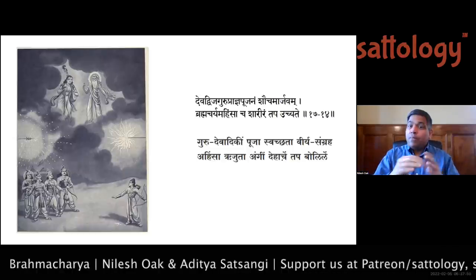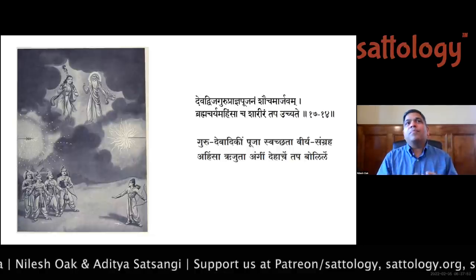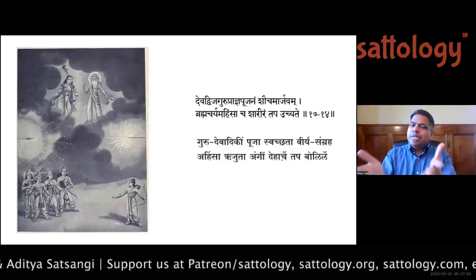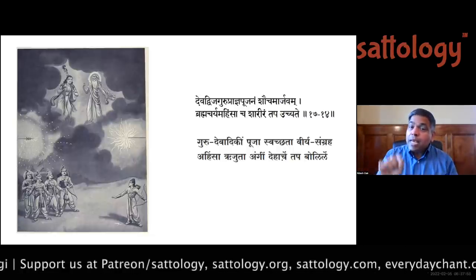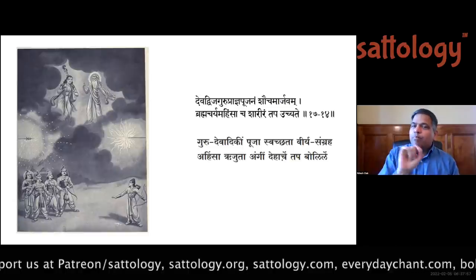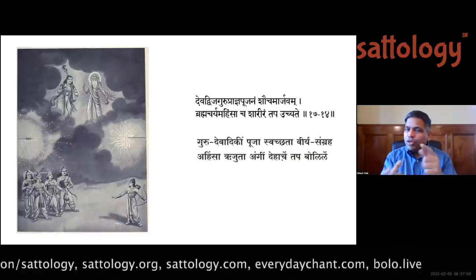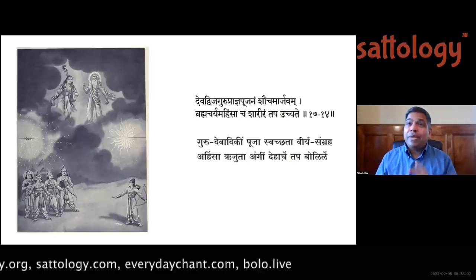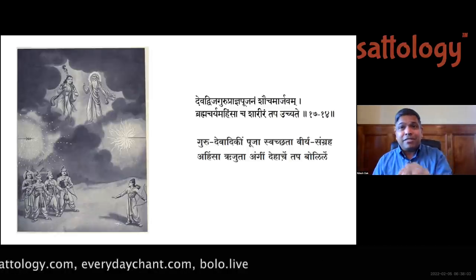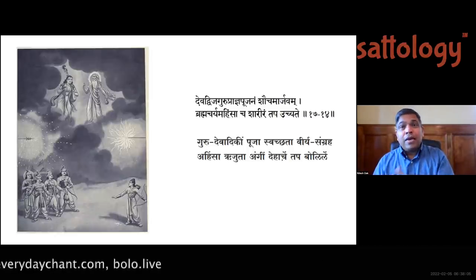The important point is the tapa. 'Brahmacharyam sacha shariram tapa uchyate' — reading backward from Sanskrit: tapa of what? Of the sharira. And now what? Brahmachariyam sacha. So that sharirik tapa includes brahmacharya. Krishna and Vasudev here in sharirik tapa always include brahmachariyam sacha.